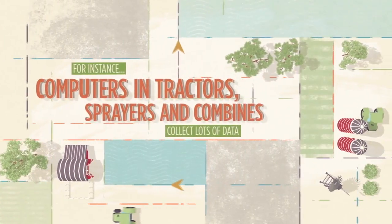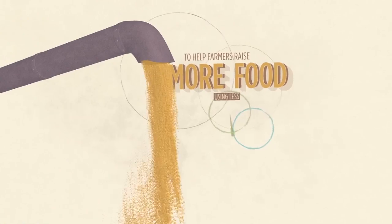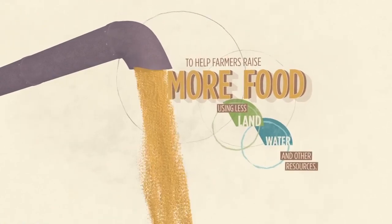For instance, computers and tractors, sprayers, and combines collect lots of data to help farmers raise more food using less land, water, and other resources.